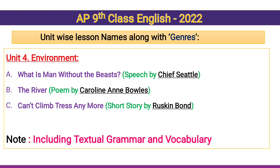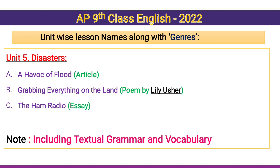Unit 5: Disasters. Reading A — 'A Havoc of Flood,' an article. Reading B — 'Grabbing Everything on the Land,' a poem written by Lily Usher. Reading C — 'The Ham Radio,' an essay. Including textual grammar and vocabulary. Unit 6 is deleted for this academic year, so no need to go through that.